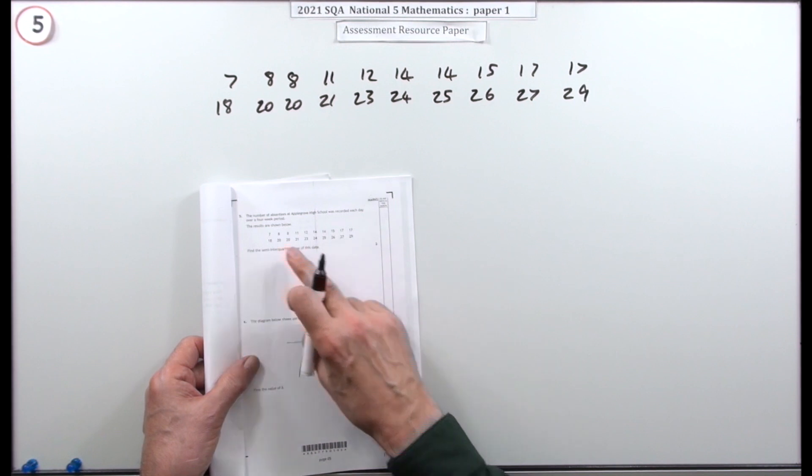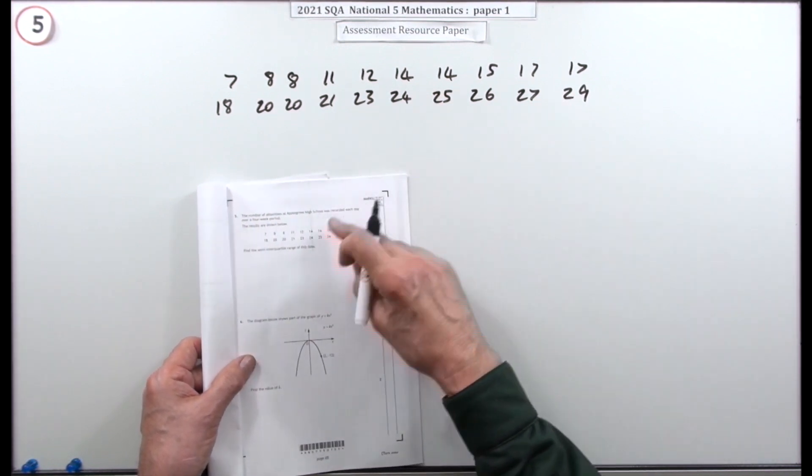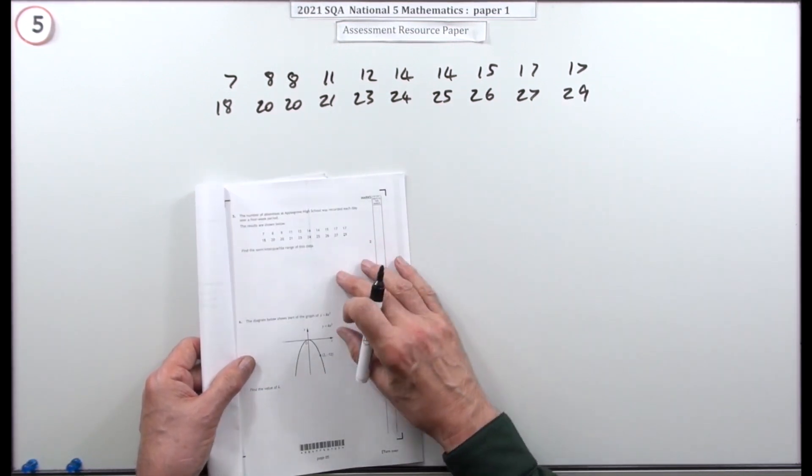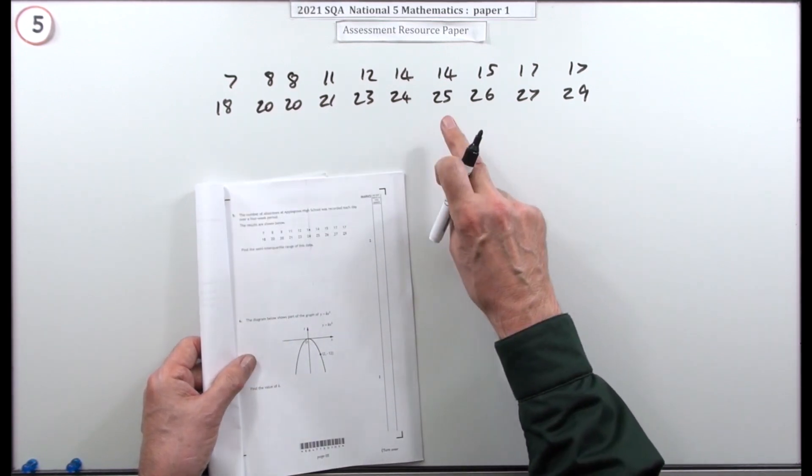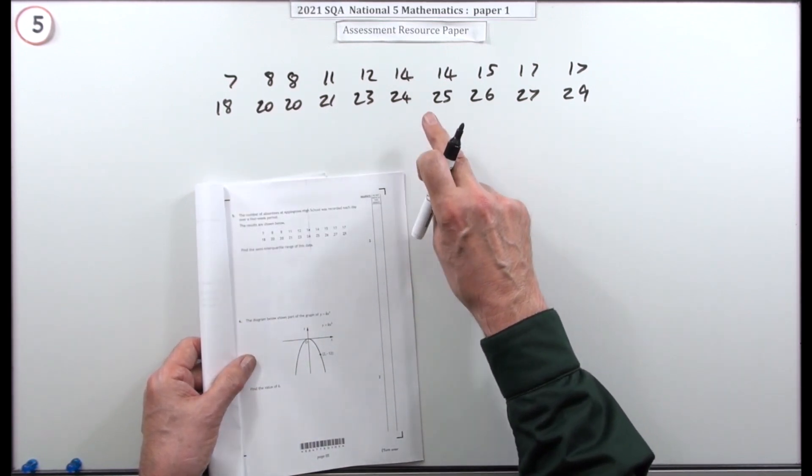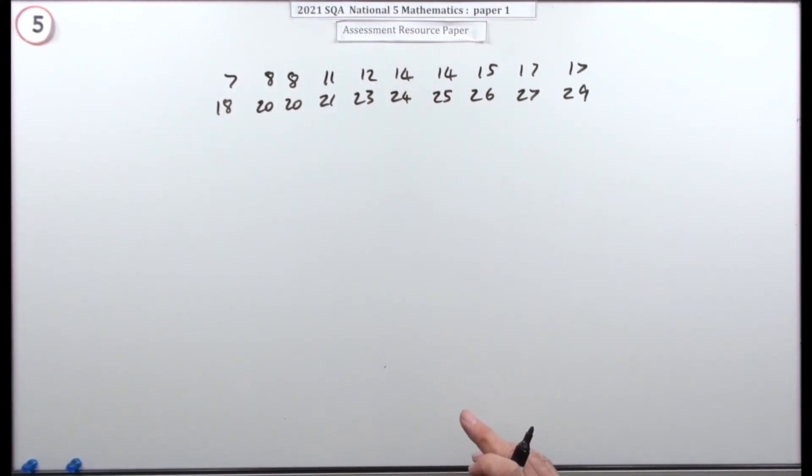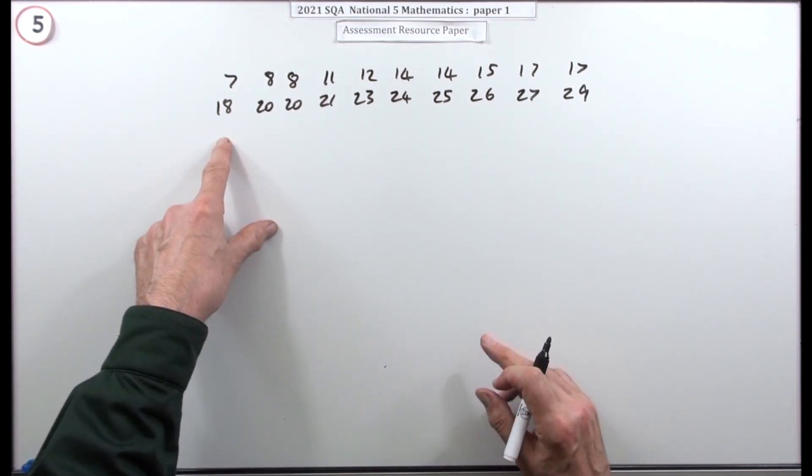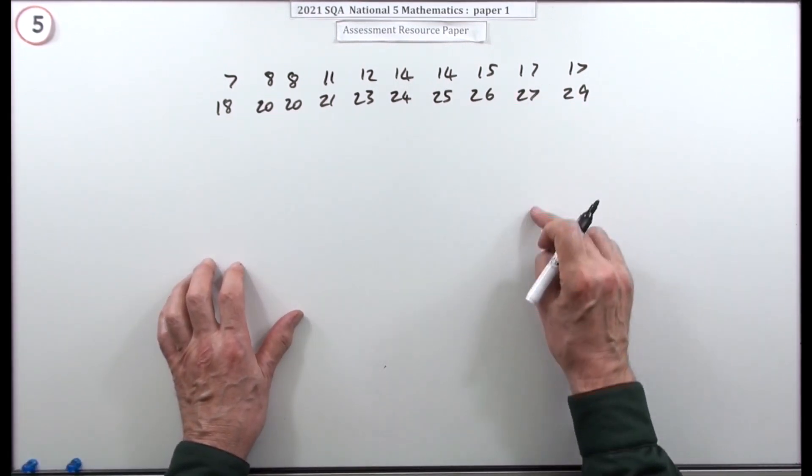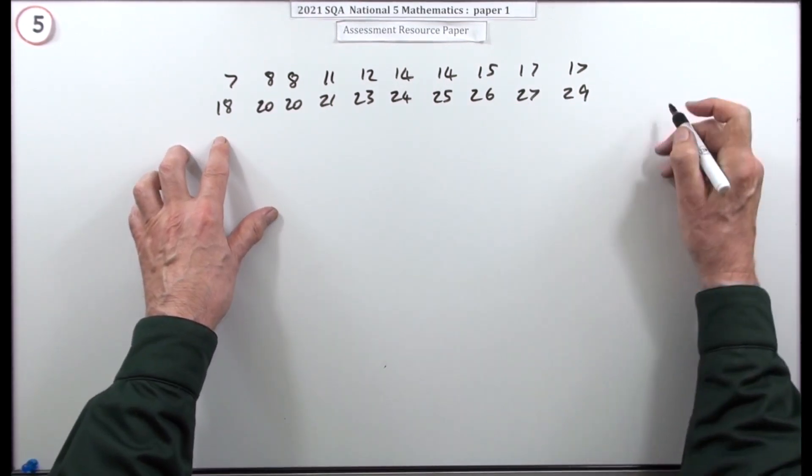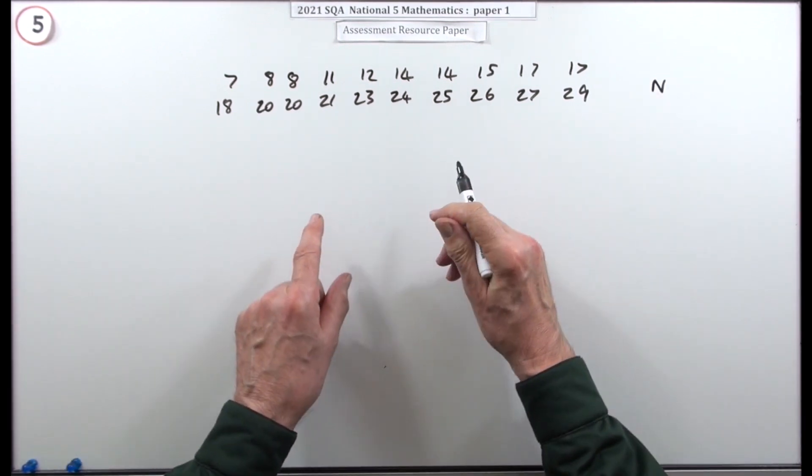Number five, just for two marks here. The number of absentees—the results are shown below. Find the semi-interquartile range of this data, which is just numbers. First thing would be put them in order, but that's been done, so they are in order.